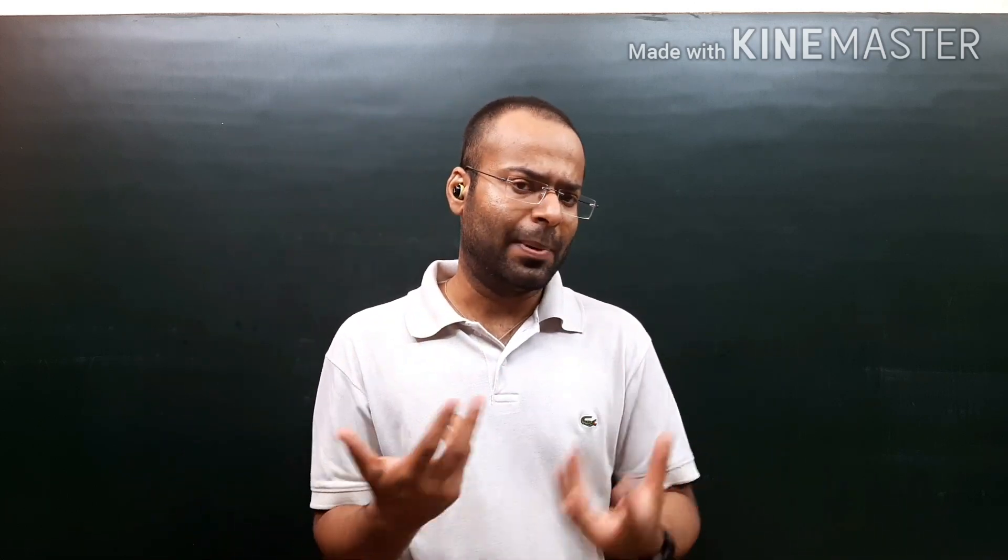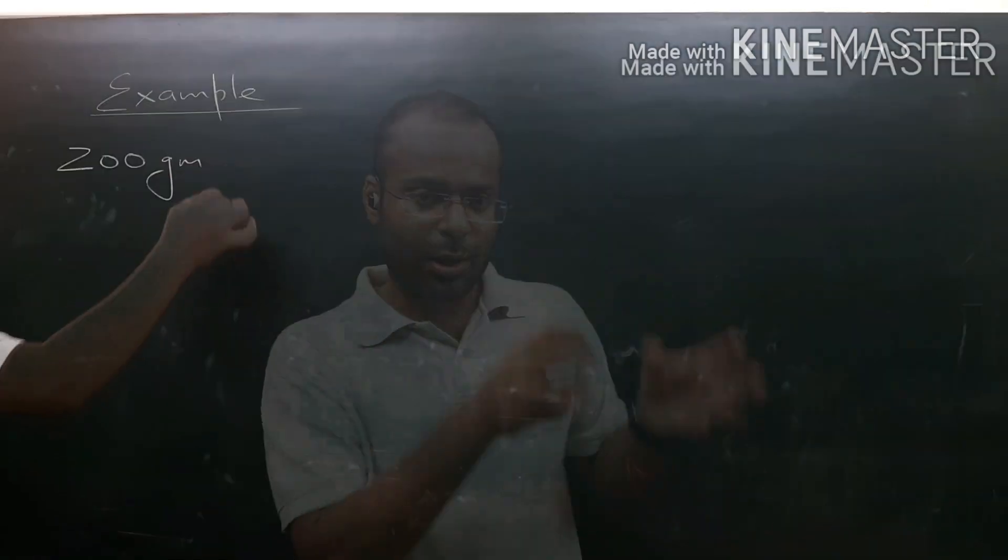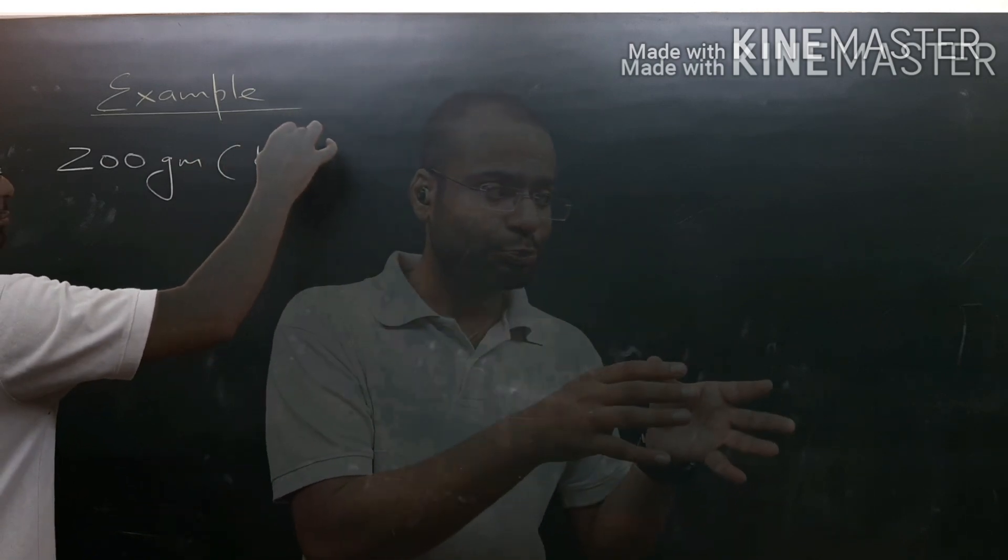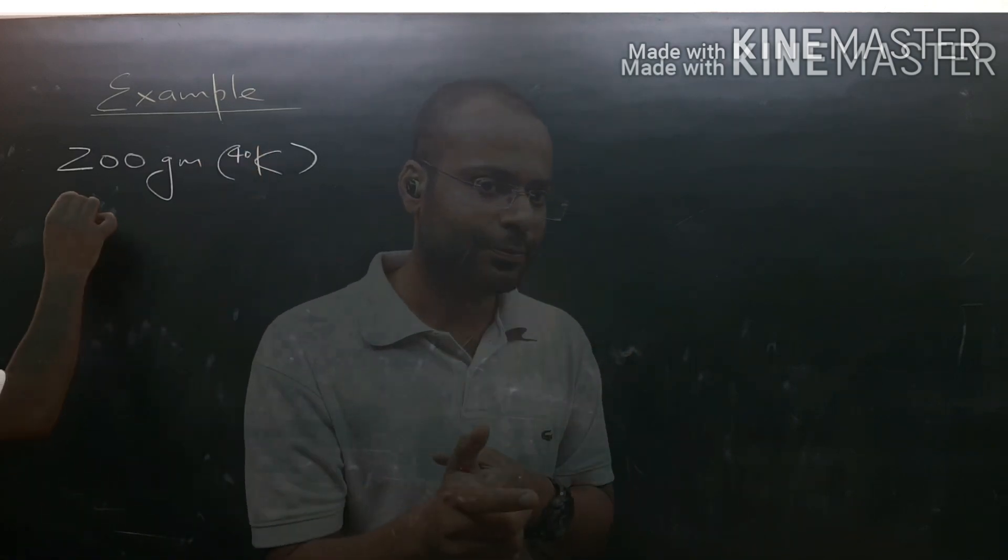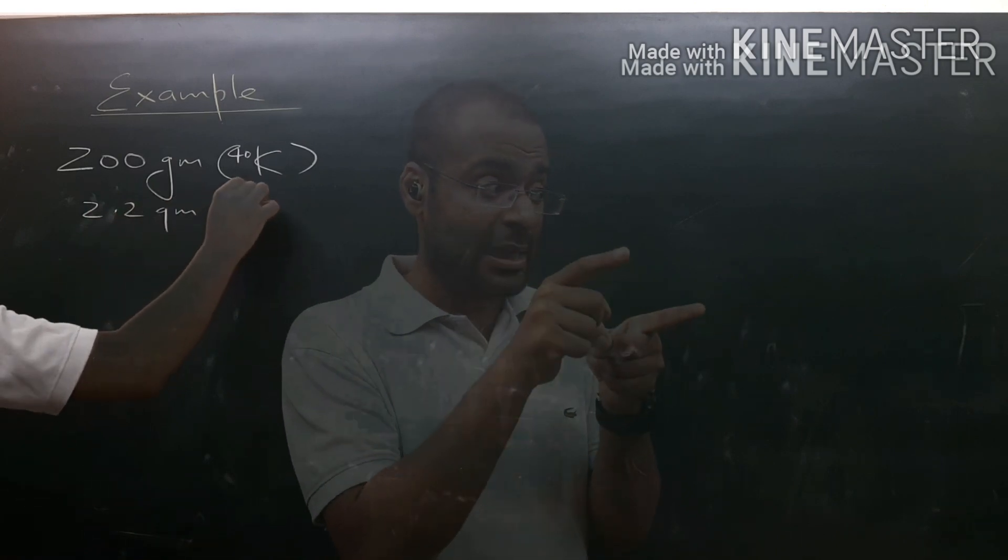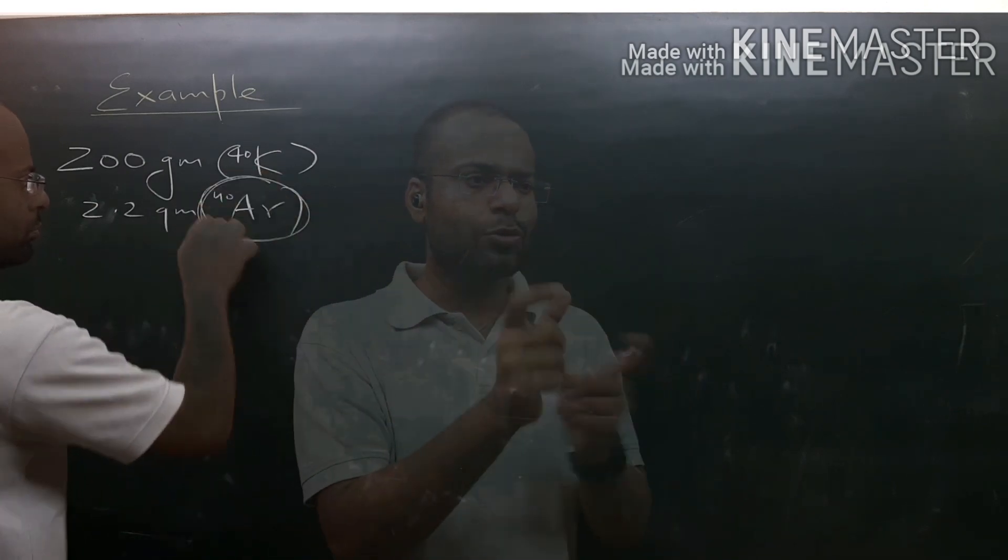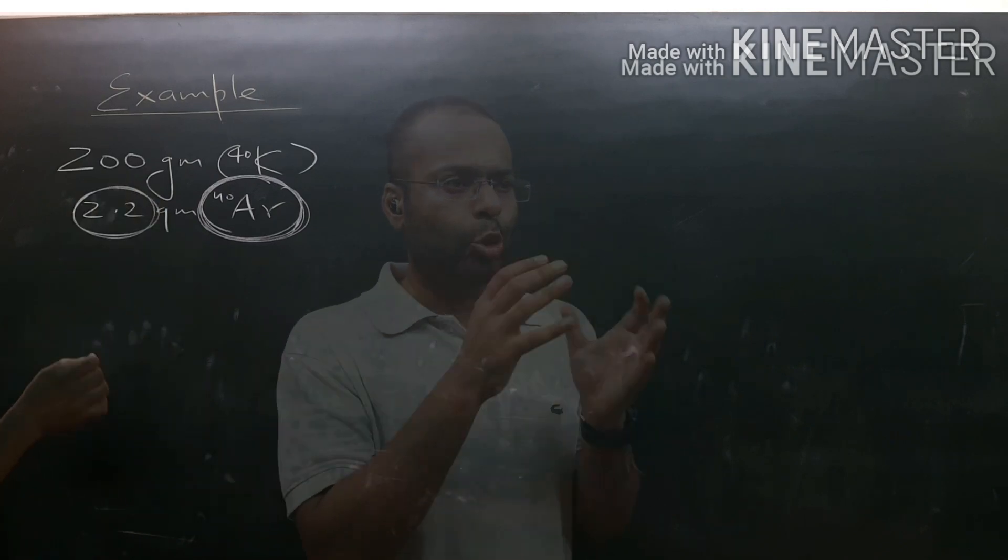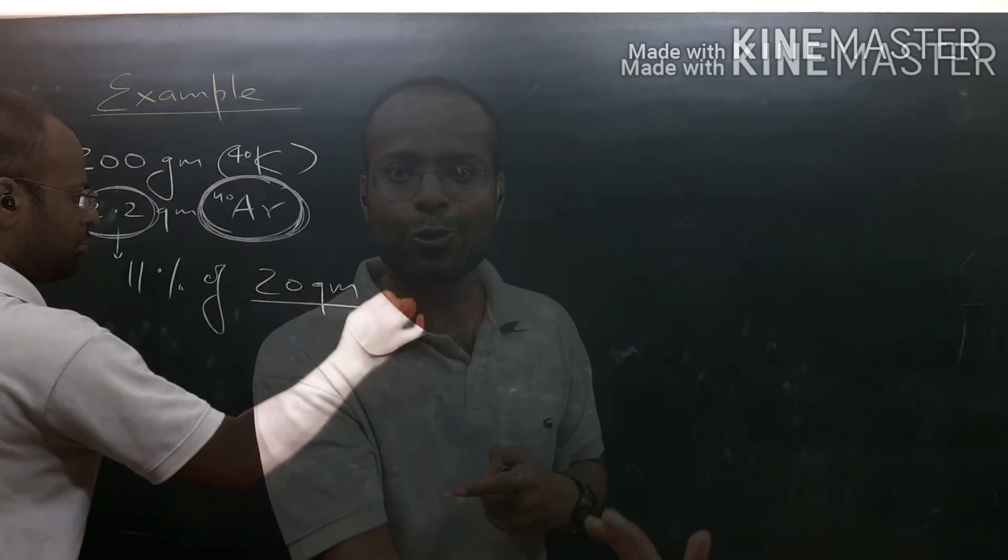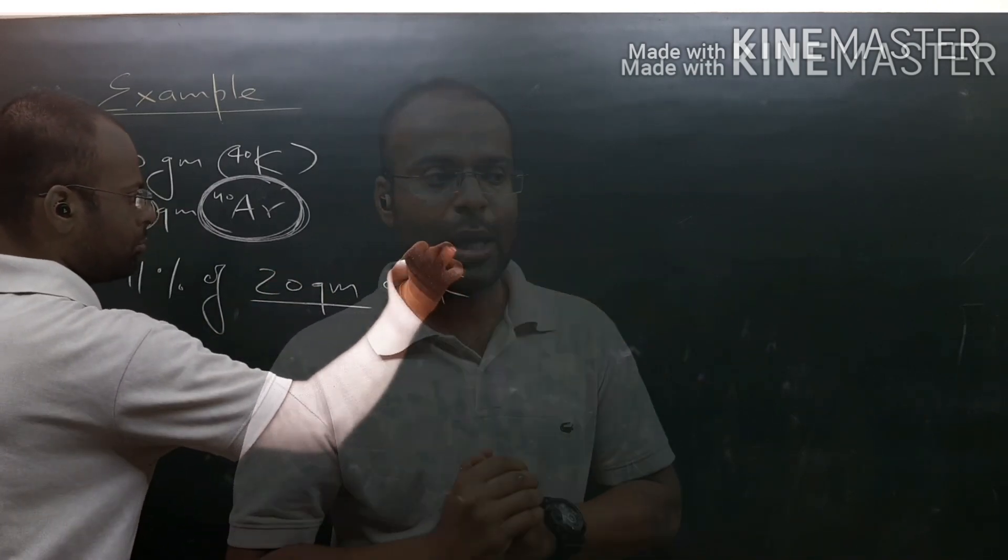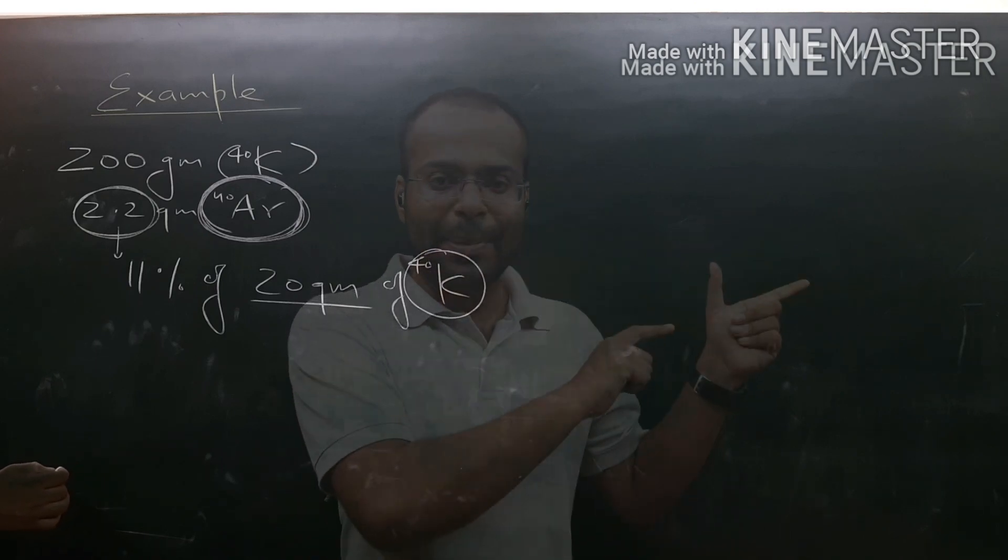Let's assume there was a sample of rock which contained 200 grams of potassium-40. There's also 2.2 grams of argon-40, and this argon-40 was not there when it solidified - it came from potassium-40 only. This 2.2 grams of argon-40 would have required approximately 20 grams of potassium-40, since only 11% remains. So total potassium-40 originally would have been 220 grams.